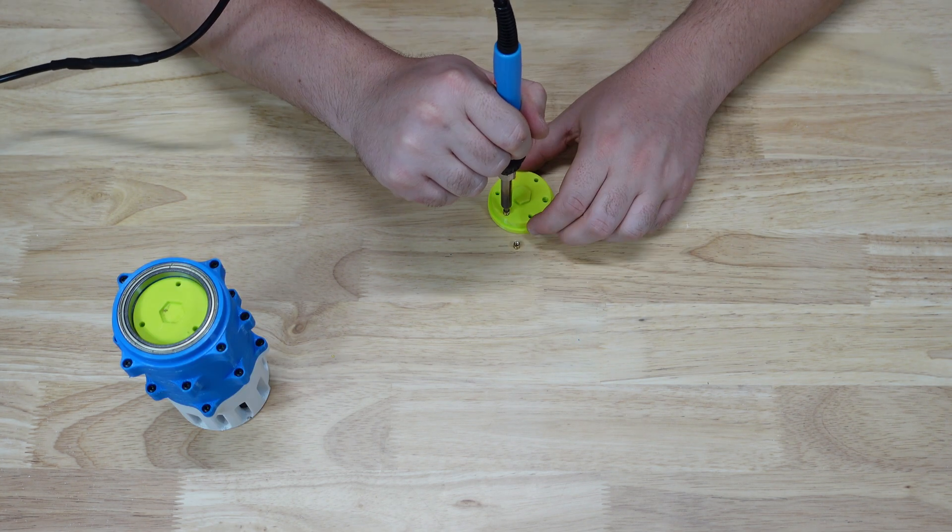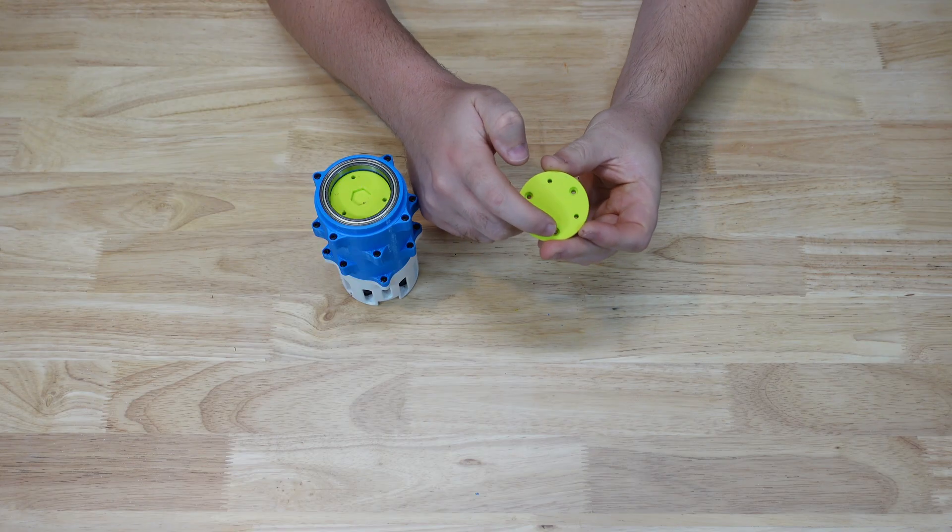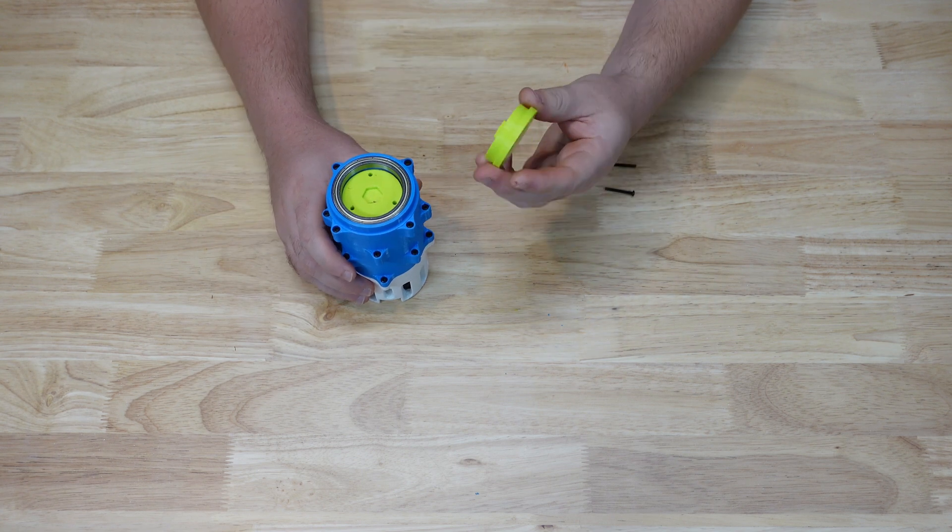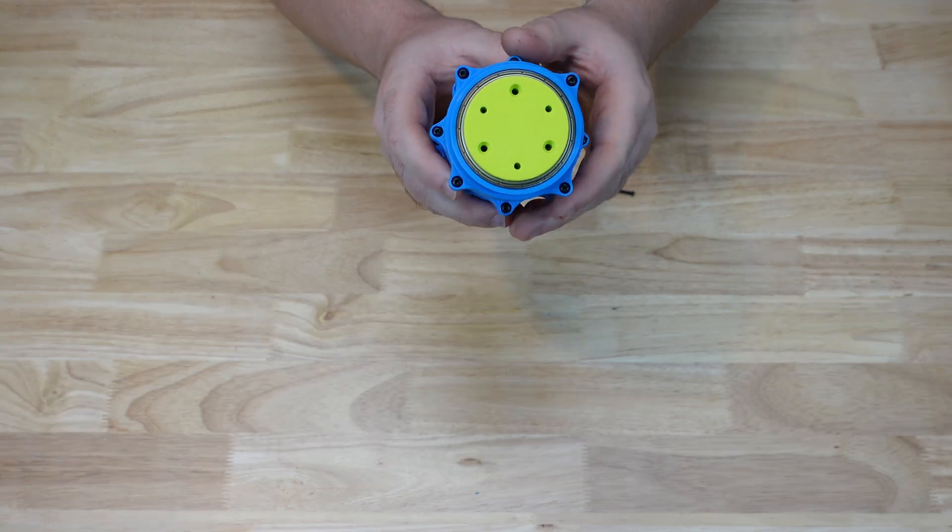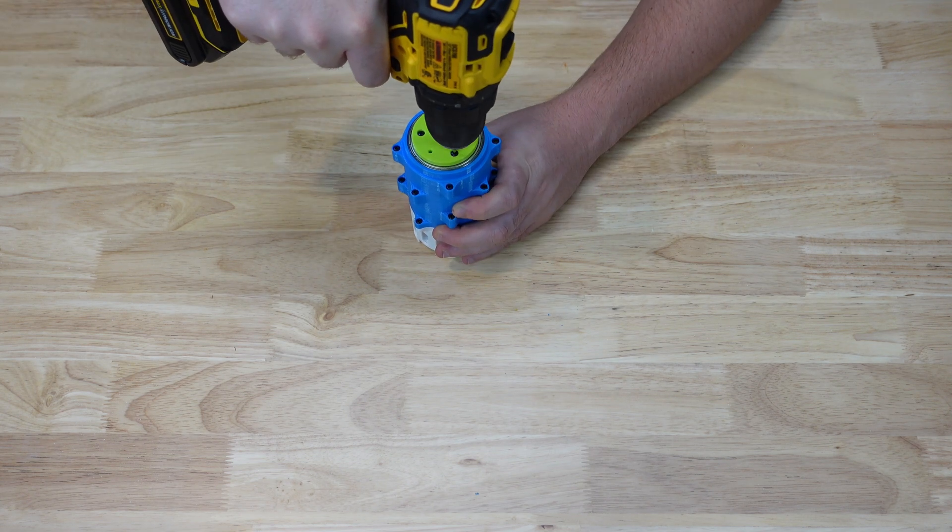I'll then add additional heat set inserts to the output for attaching end effectors. The counterbore holes on the output should line up with the holes on the lower output hub piece and slide into the slot there, then should look like this. M3 screws are added to the counterbore holes and screwed on to finish the assembly.